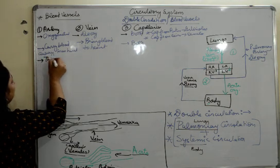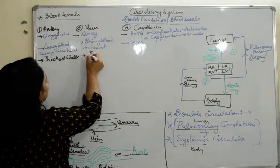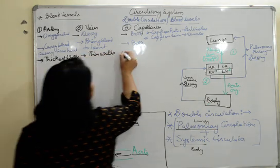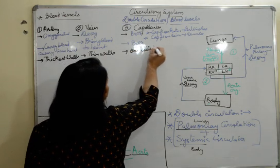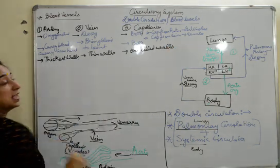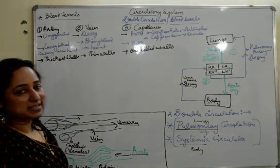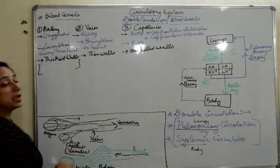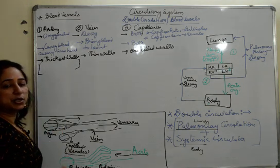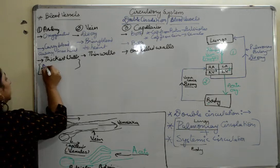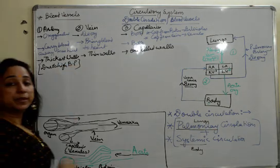Now we move to structural differences. Arteries are thick, have thickest walls. Veins have thin walls. And capillaries - very very important one question - they have one celled walls. Why arteries have thickest walls? Because blood moves with a very high pressure in order to withstand high blood pressure.